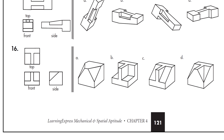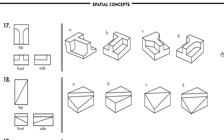Question sixteen: answer is option C. Options A and D are discarded because the front view requires an inverted T-shape, which is absent in both. Option B has sharp edges on the side, but the side view requires a slope. Option C has the correct inverted T-shape and slope — correct answer.